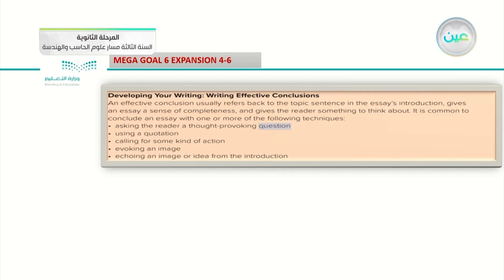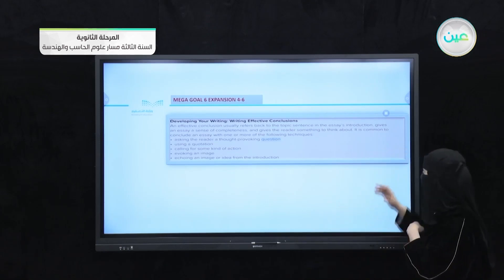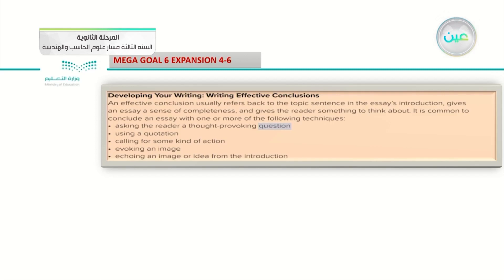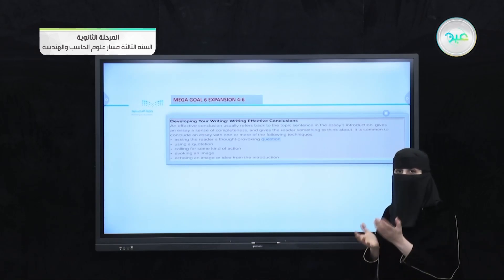An effective conclusion, by definition, usually refers back to the topic sentence in the essay's introduction. So, at the start of our conclusion, we will begin with some information taken from the introduction of our essay and put it inside our conclusion. This gives an essay a sense of completeness and gives the reader something to think about. You should make sense for your readers and apply some things that keep your reader excited about what you write.